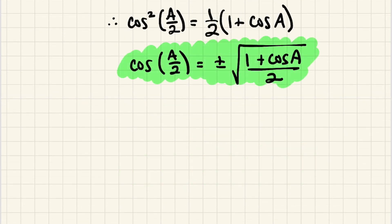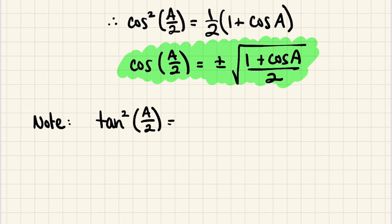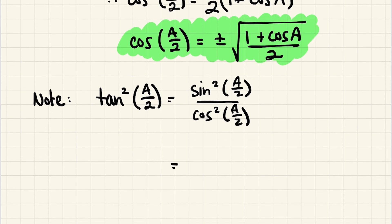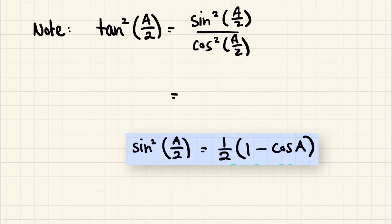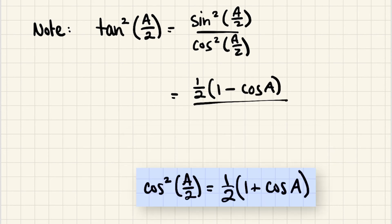Let's quickly uncover a half angle identity for tangent, and then we'll go on and do some examples. Tangent squared of a half angle — we know that's just sine squared of the half angle divided by cosine squared of the half angle. We can see that sine squared of a over 2 is one half of 1 minus cosine of a, and cosine squared of a over 2 is one half of 1 plus cosine of a.